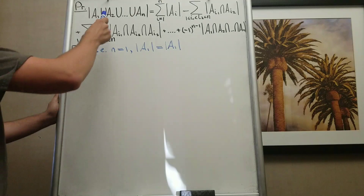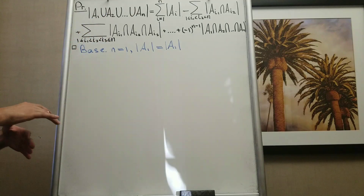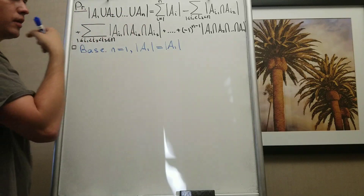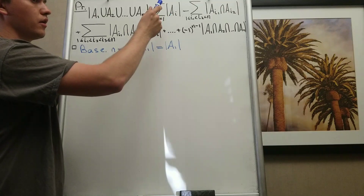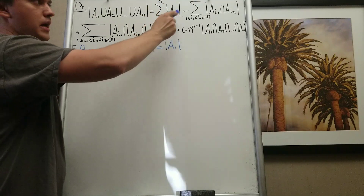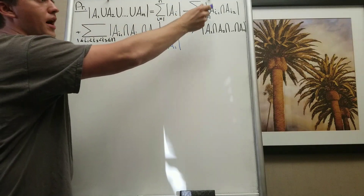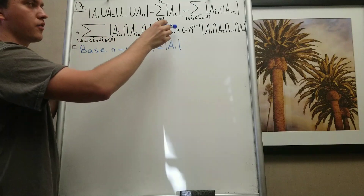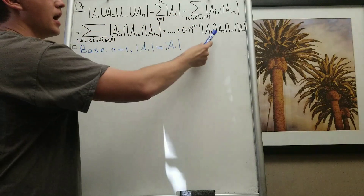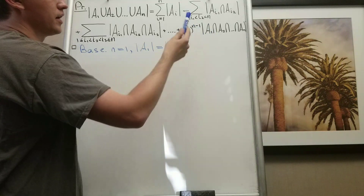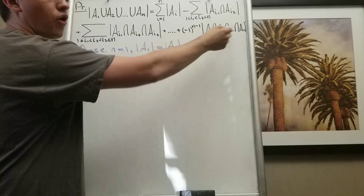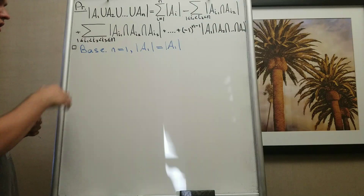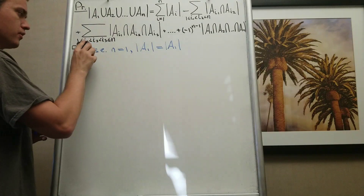Let me discuss the formula a little. If I have any n finite sets and I want to find the number of elements in their union, I calculate the sizes of each set, subtract all pairwise intersections, add all triple intersections, subtract all quadruple intersections, and so on — at the end, if n is odd I add the full intersection, and if n is even I subtract it. We've proved the base, so now let's prove the induction step.